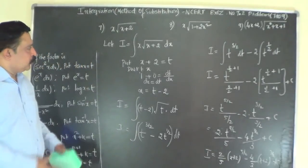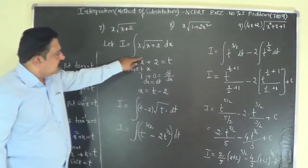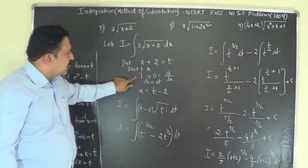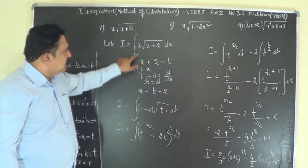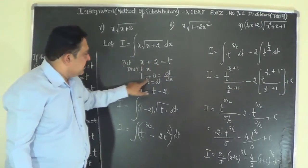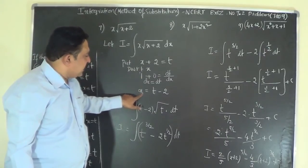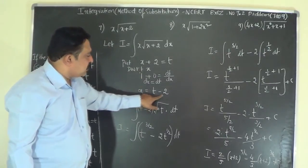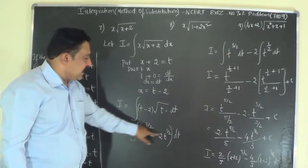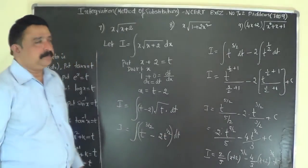So here the special steps are: you put x+2 equal to t, then express x in terms of t so that you can integrate entirely in terms of t, and finally substitute back for t.